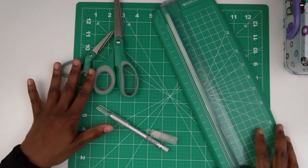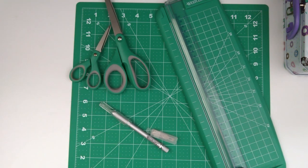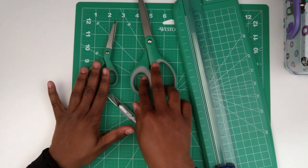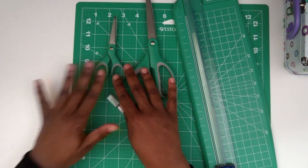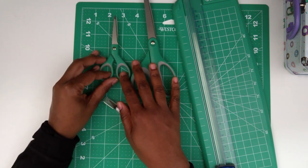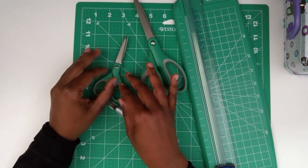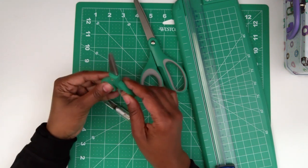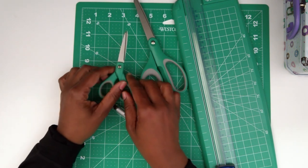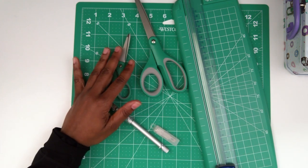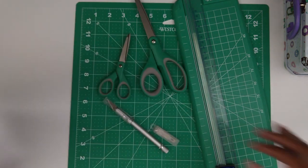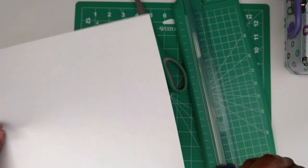I went ahead and took everything out of the package so we can take a closer look at everything. Let's go ahead and just start with the scissors. These are titanium bonded scissors. They say they stay sharper longer and they're good for whether you're left-handed or right-handed, and there is a lifetime warranty on these.